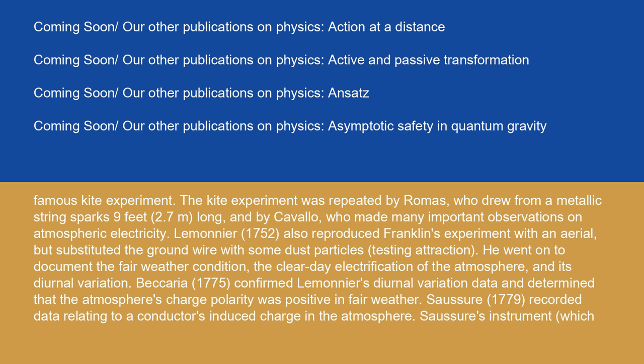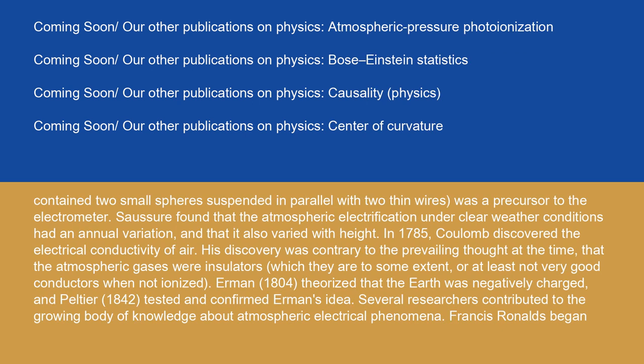Saussure (1779) recorded data relating to a conductor's induced charge in the atmosphere. Saussure's instrument, which contained two small spheres suspended in parallel with two thin wires, was a precursor to the electrometer. Saussure found that the atmospheric electrification under clear weather conditions had an annual variation, and that it also varied with height. In 1785, Coulomb discovered the electrical conductivity of air. His discovery was contrary to the prevailing thought at the time that the atmospheric gases were insulators, which, to some extent, were at least not very good conductors when not ionized.